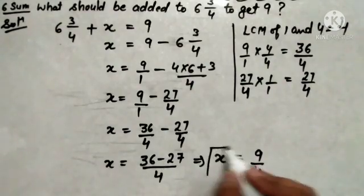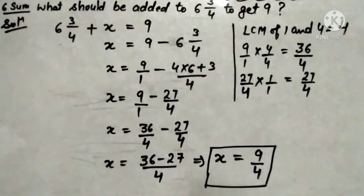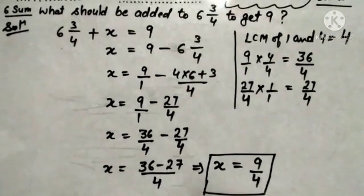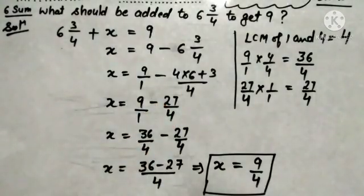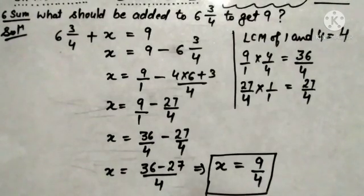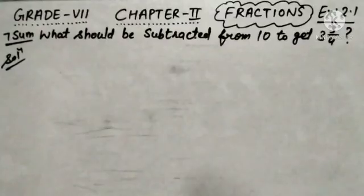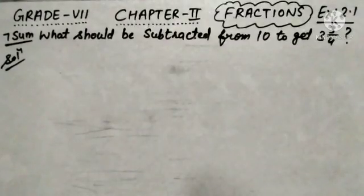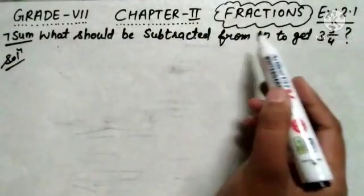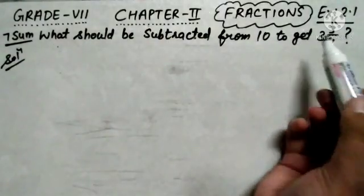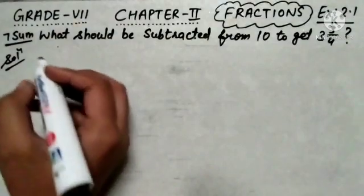36 minus 27 equals 9, so x equals 9 upon 4. The required value of x is 9 upon 4. That means if we add 9 upon 4 into 6 and 3 upon 4, the answer will be 9. This is all about the 6th sum of exercise 2.1. Students, the next sum is sum number 7. The statement is: what should be subtracted from 10 to get 3 and 3 upon 4?